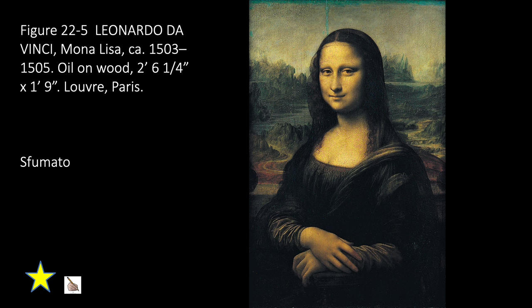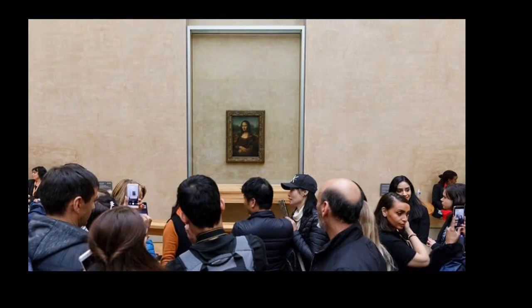Leonardo da Vinci's Mona Lisa. Sfumato is Italian for smoky — it's a smoky-like haziness that subtly softens the outlines in paintings. You may have heard of the Mona Lisa or have seen it in pop culture, movies, on clothing. Why is the Mona Lisa so famous?